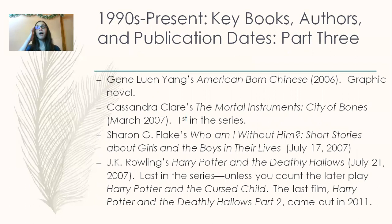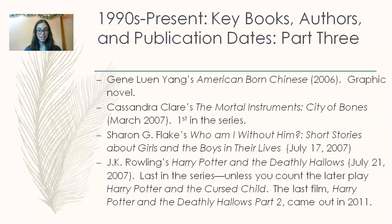Gene Luen Yang's American Born Chinese is published in 2006. It's a graphic novel that deals a lot with ethnicity and identity — the main character struggles to find where they fit in and whether they can reconcile being Chinese and being American. It's a really interesting read because not only does it have all those issues, but it's also a very compelling graphic novel. Cassandra Clare's The Mortal Instruments: City of Bones is published in March 2007, the first in the Mortal Instruments series. Sharon G. Flake's Who Am I Without Him? is published July 2007.